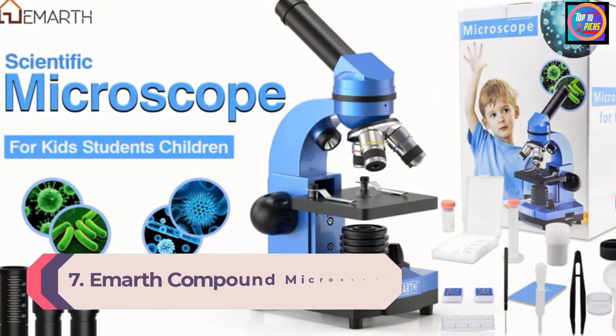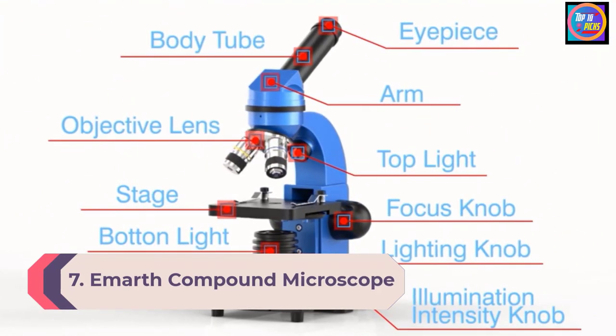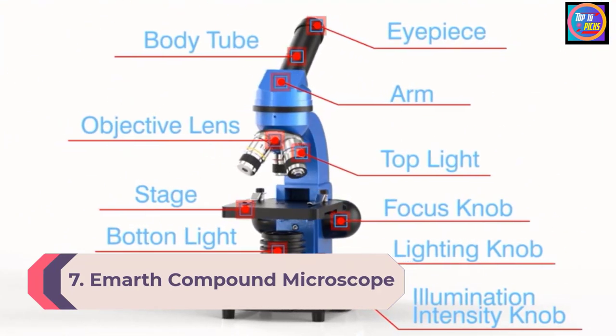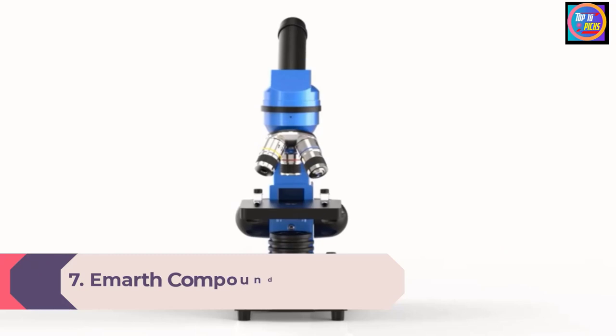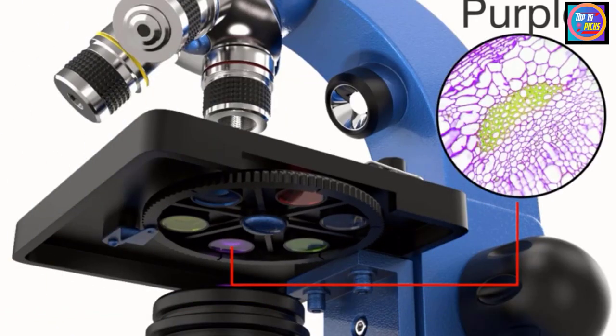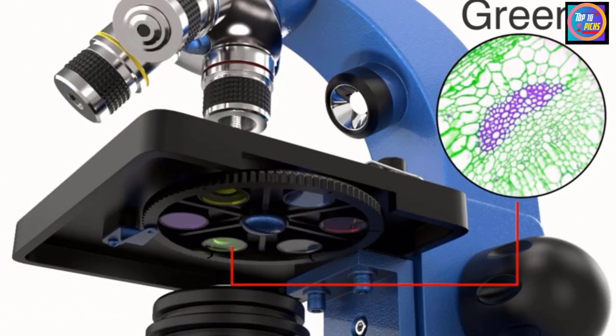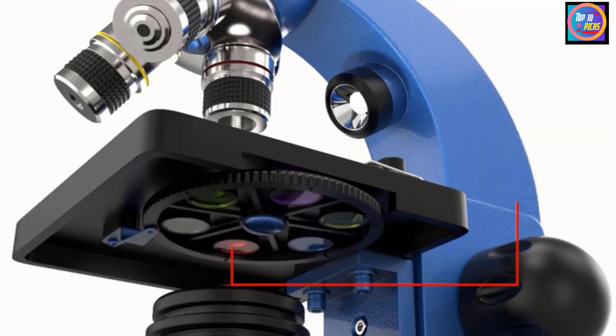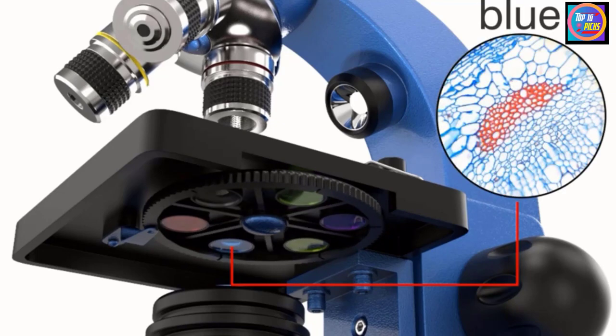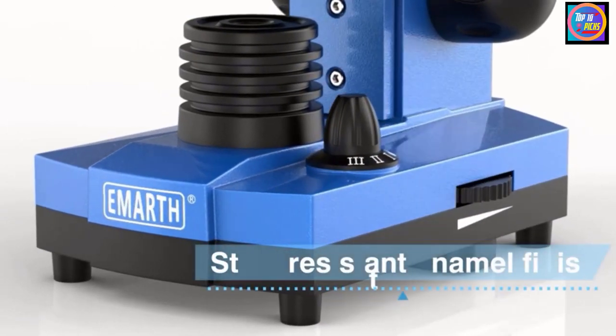Number 7. Amarth Compound Microscope. This beginner compound microscope has an impressive lineup of features found in models with a higher price point, including 6 magnification levels up to 1000x, 3 optical lenses, and 2 built-in eyepieces.